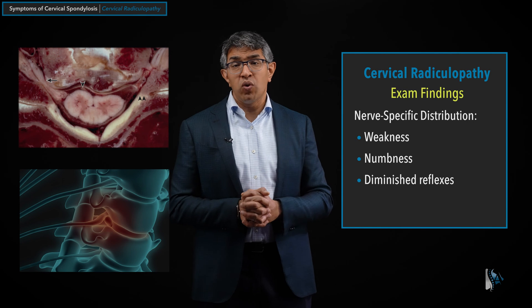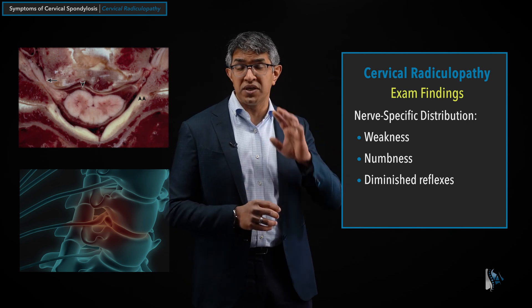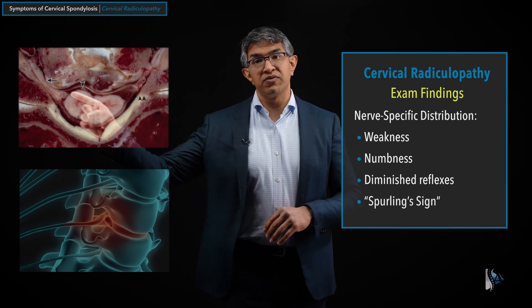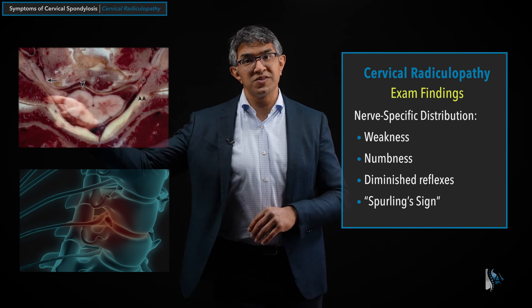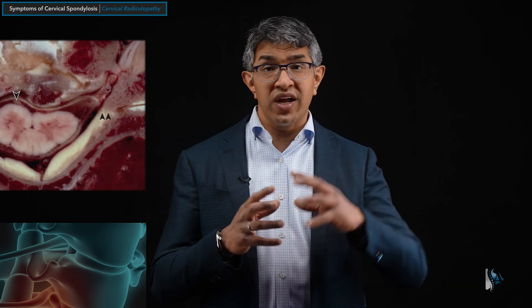One interesting finding with cervical radiculopathy is something called Spurling's sign. If there's pressure and inflammation on a nerve, leaning your head toward that side will tend to further pinch the inflamed nerve and trigger symptoms of radiculopathy — pain shooting down the arm wherever that nerve goes. The maneuver involves having the patient lean, turn, or extend their head to squeeze down on the foramen and see if it recreates symptoms in the arm.